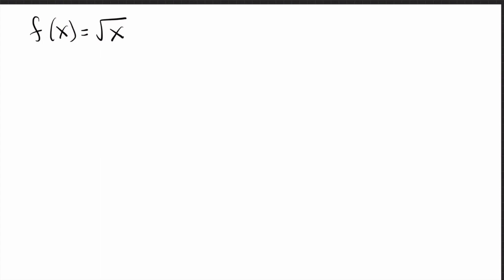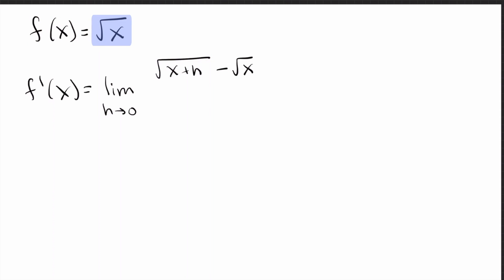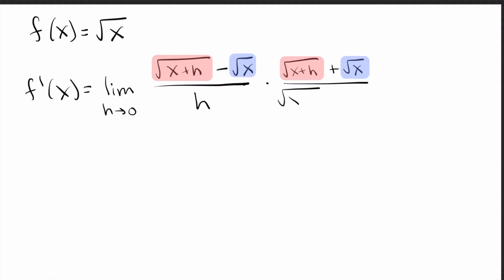Number four is the square root of x. This one looks pretty simple but can really give you trouble. Plugging into the limit definition, we get root x plus h minus root x over h. A lot of people get here and they're stuck — you can't subtract those square roots, can't cancel anything, can't square anything out. This is the second big trick: multiply the top and bottom by the conjugate of the top. The conjugate means take what you've got on top and switch the sign in the middle — we've got a minus, so switch it to a plus.